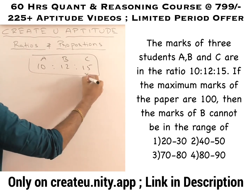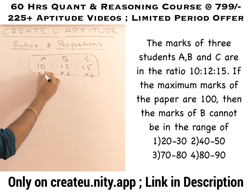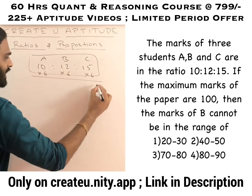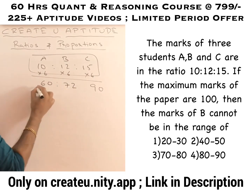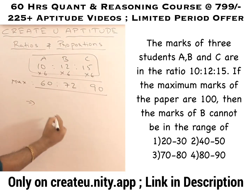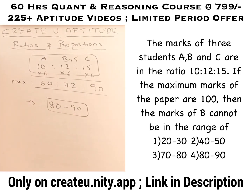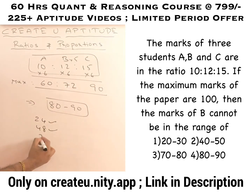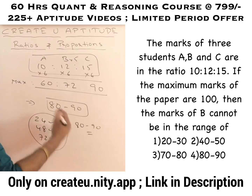So the maximum multiplier is 6. The maximum marks C can score is 90, the maximum marks B can score is 72, and A can score is 60. Taking this into consideration, B cannot score in the range of 80 to 90, because B can score 24 (in the 20–30 range), 48 (in the 40–50 range), and 72 (in the 70–80 range). B cannot score anything in between 80 and 90, so the answer is 80 to 90.